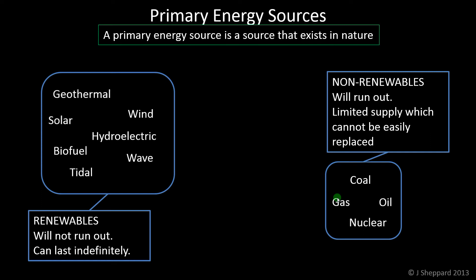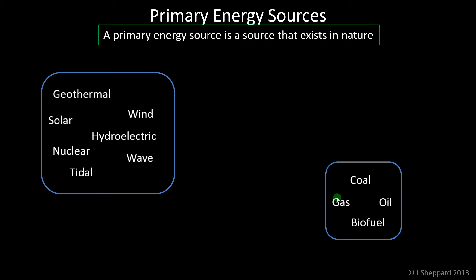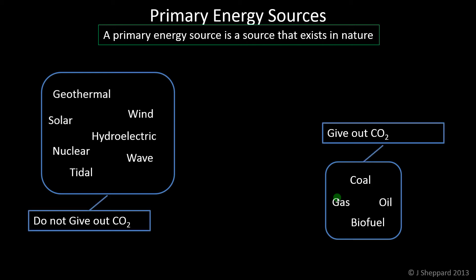There are other ways to group these as well. Swapping nuclear and biofuel gives us a grouping of: does give out CO2 when used, and doesn't. Coal, oil, and gas — the fossil fuels — give out carbon dioxide when burned. Biofuel as well, because it's carbon-based, gives out carbon dioxide when it burns. Nuclear fuel, although it is non-renewable, doesn't give out carbon dioxide. So that subtle distinction is often missed — people think renewable means doesn't give out carbon dioxide, but that's not true. There is a difference in the grouping, so it's useful to remember that.